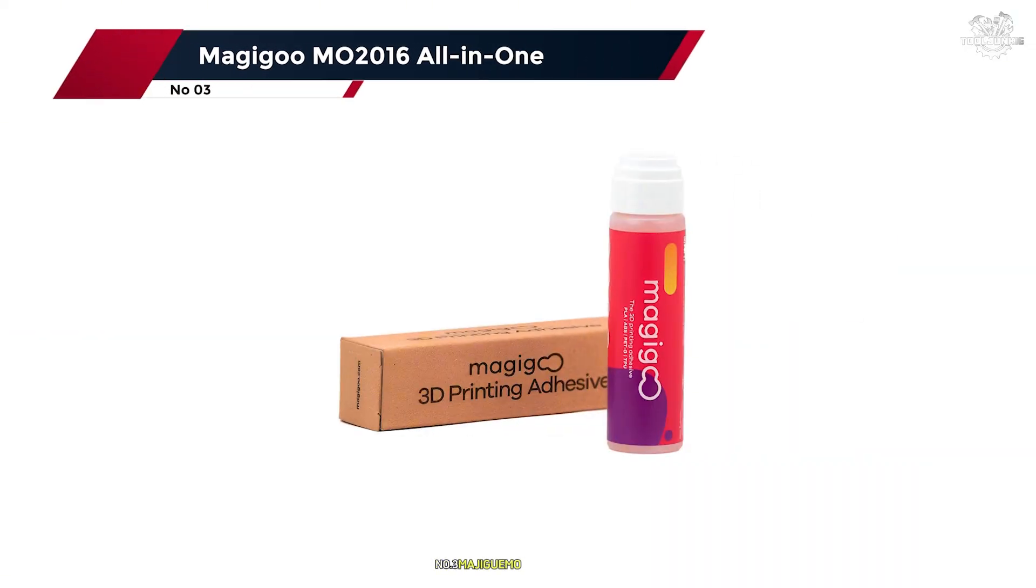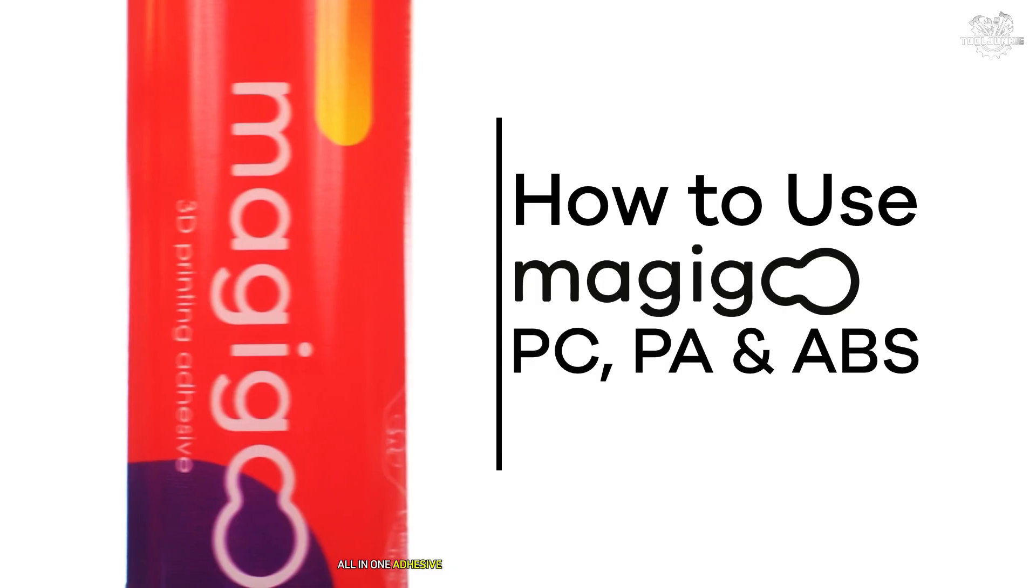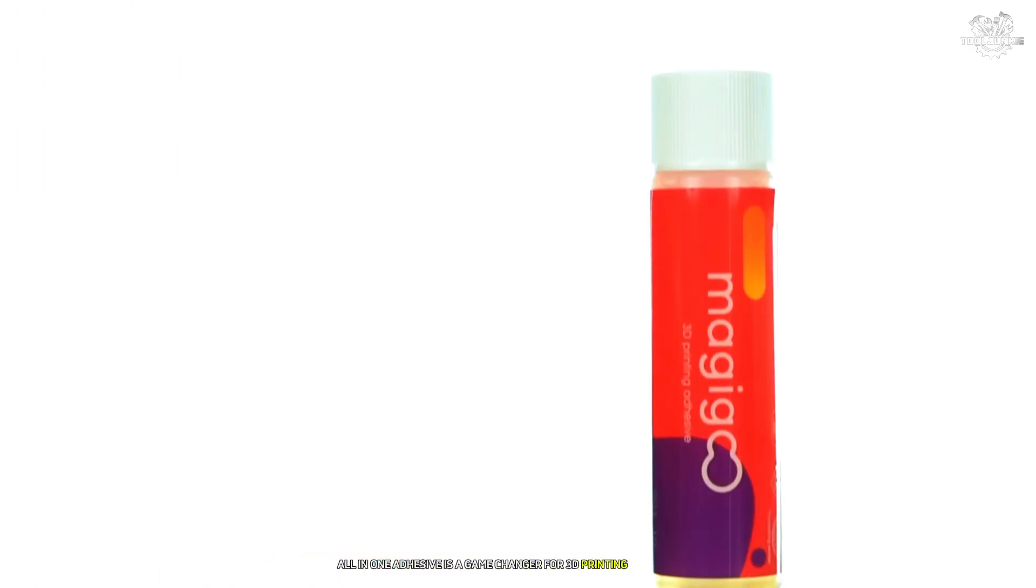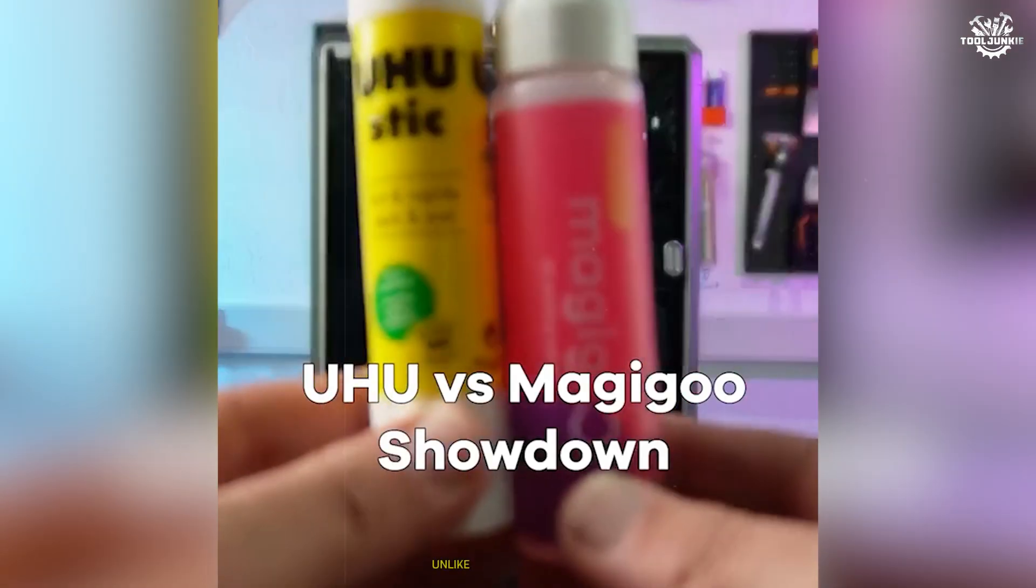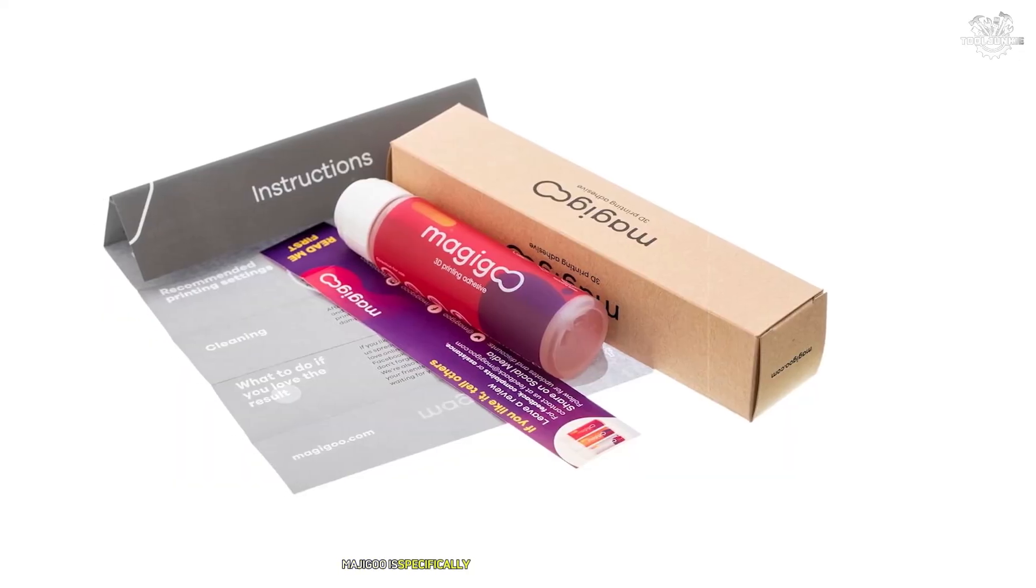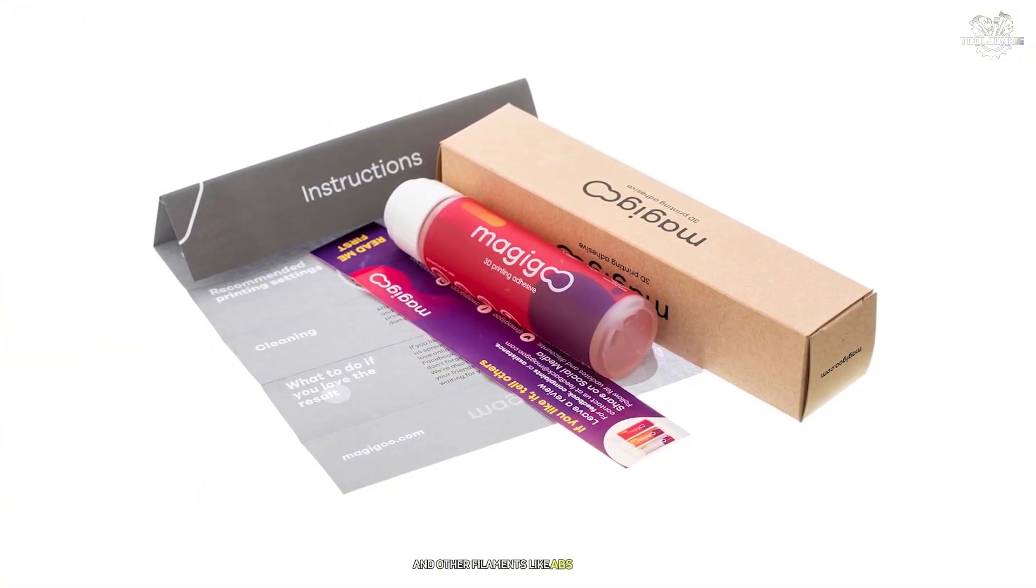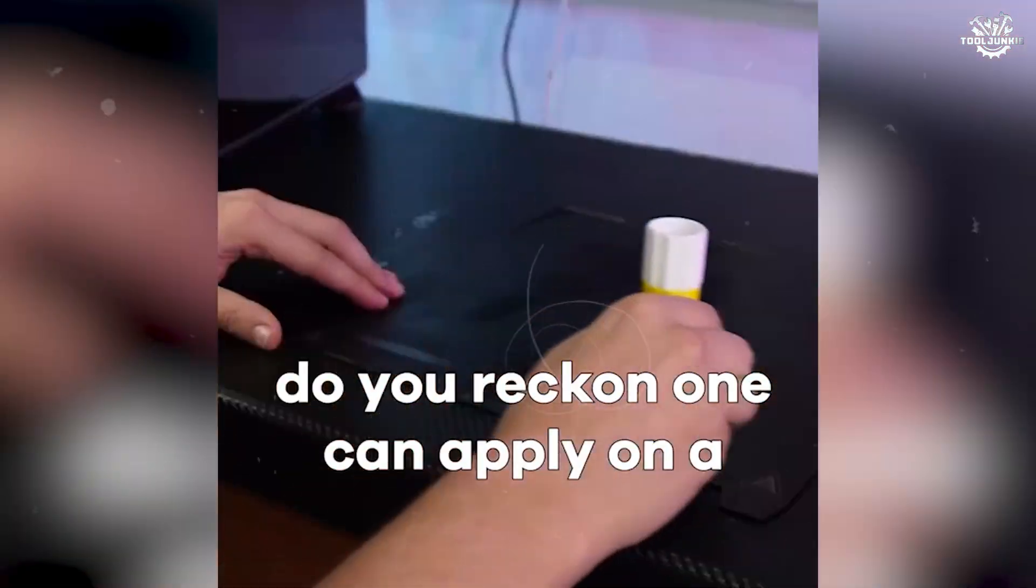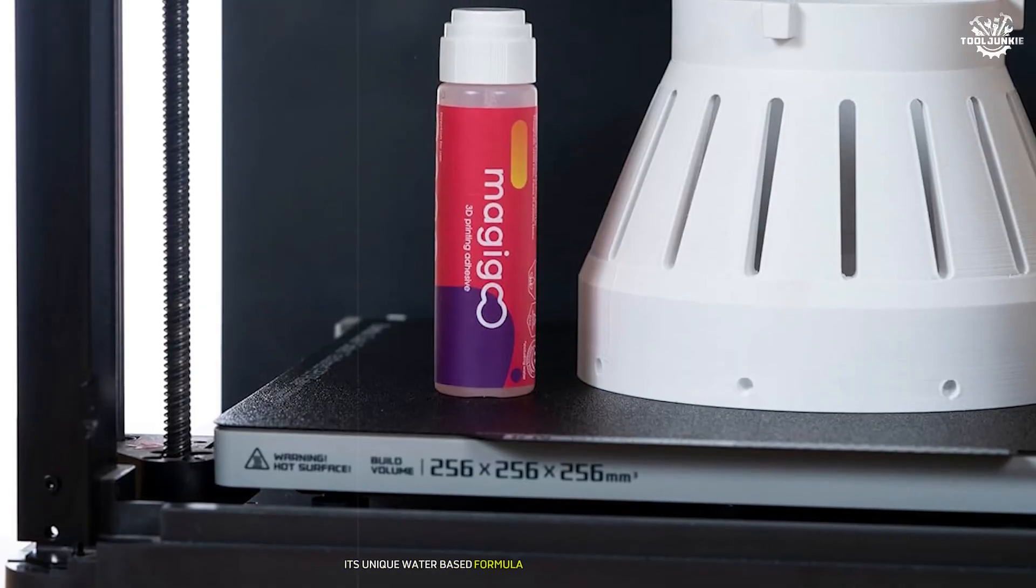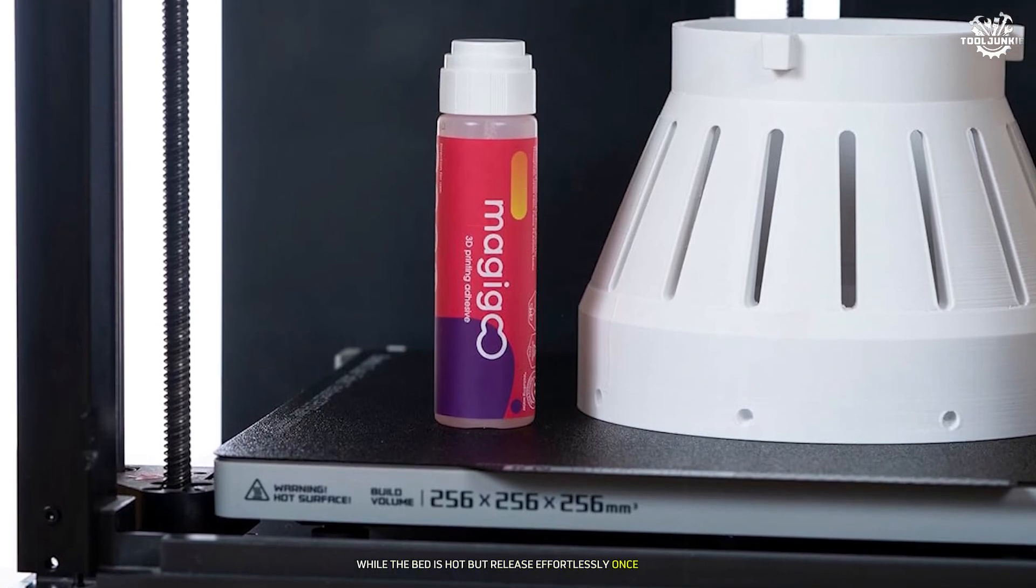Number 3. MAJIGOO MO 2016 All-in-One. The MAJIGOO MO 2016 All-in-One Adhesive is a game-changer for 3D printing enthusiasts who struggle with first-layer adhesion issues. Unlike traditional superglues, MAJIGOO is specifically designed to enhance the adhesion of PLA and other filaments like ABS and PETG to build plates during the printing process.